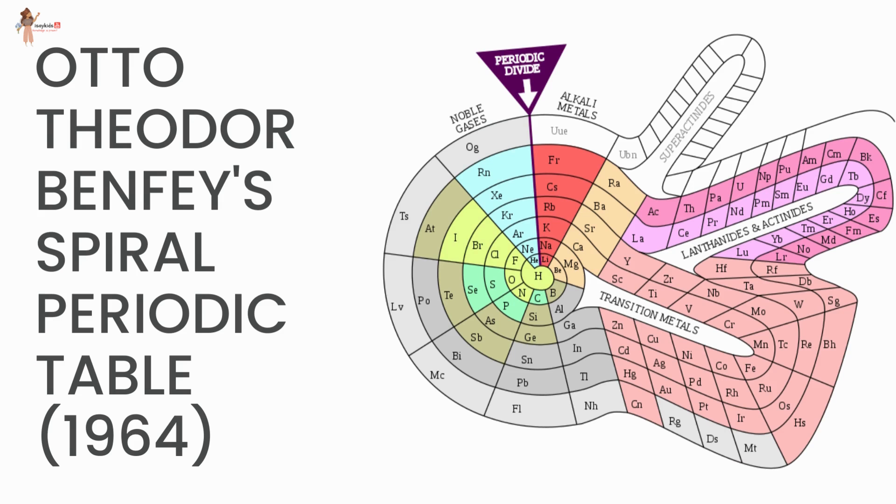Otto Theodor Benfey's spiral periodic table is one of the alternate periodic tables developed in the past. If you know anything about this table, let us know in the comment section below.